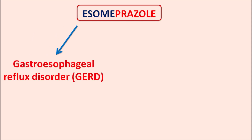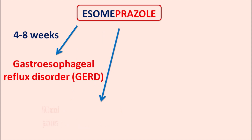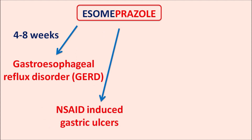S-omeprazole can be used in the treatment of GERD, gastroesophageal reflux disorder, where reflux of gastric acid into the esophagus results in esophagitis and heartburn. In such conditions, S-omeprazole can be given and it can be used up to 4 to 8 weeks based on the severity of the disorder. Similarly, this drug can be used in the treatment of NSAID-induced gastric ulcers, and for this purpose it can be used up to 6 months.